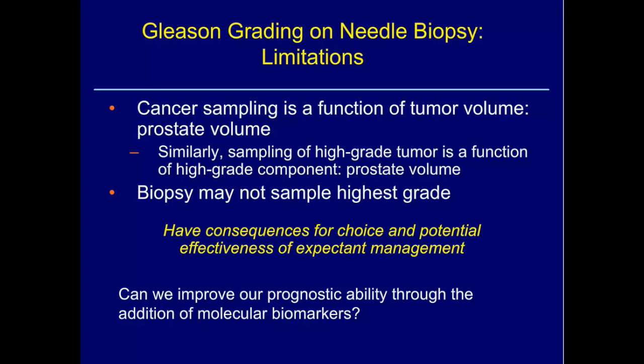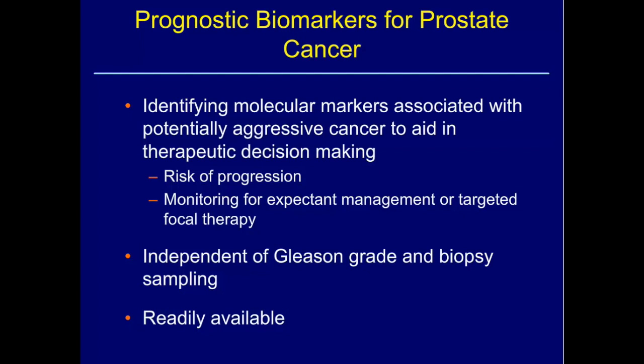Can we improve our prognostic ability through the addition of molecular biomarkers? The aggressiveness of a tumor can always be taken back to the molecular level, and if we understand the molecular underpinnings of what makes a tumor aggressive we can do better than Gleason score alone. These biomarkers are associated with a potentially aggressive tumor — we want them to be independent of Gleason grade and readily available. We've had a boon in molecular markers for prostate cancer in the last few years.